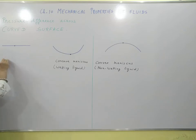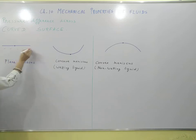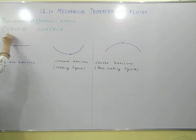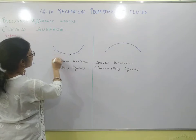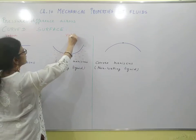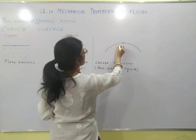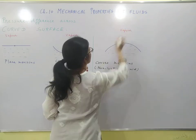Now, for the plane meniscus — meniscus is the surface of the liquid — if we are talking about this plane meniscus, the liquid is on this side and the vapor is on the other side. Similarly, for the other cases, the liquid and vapor are on their respective sides.